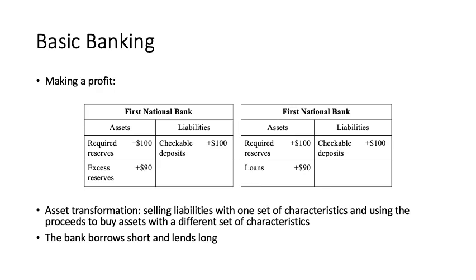In this case, we assume that the required reserve ratio becomes just 10%. The required reserve should decrease from $100 to $10 and the difference of $90 represents excess reserves. These excess reserves can be used by the bank. As shown in the second table, these excess reserves are used by the bank to provide loans, changing required reserves from $100 to just $10.